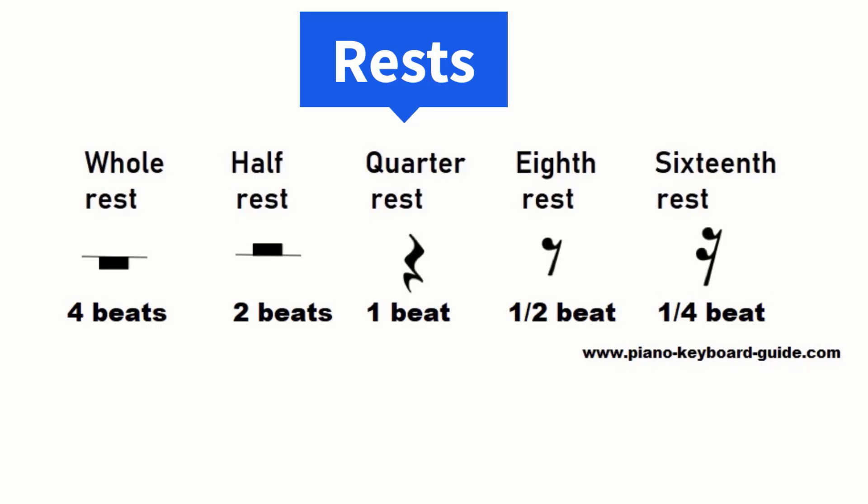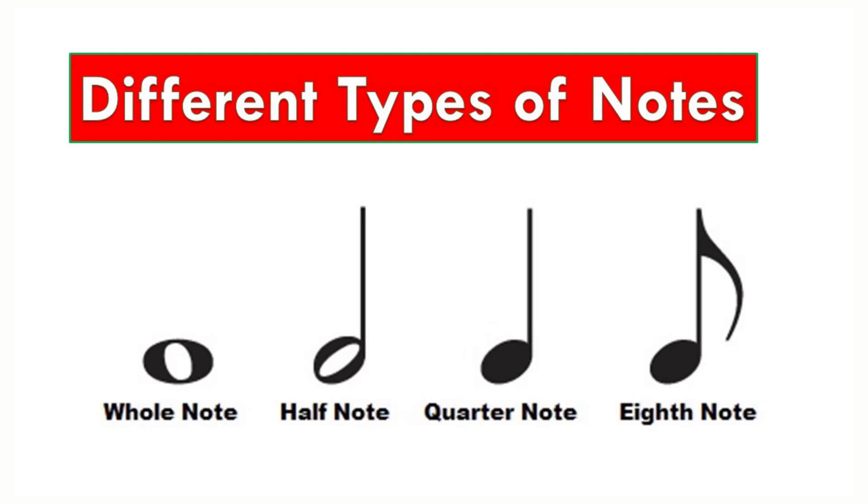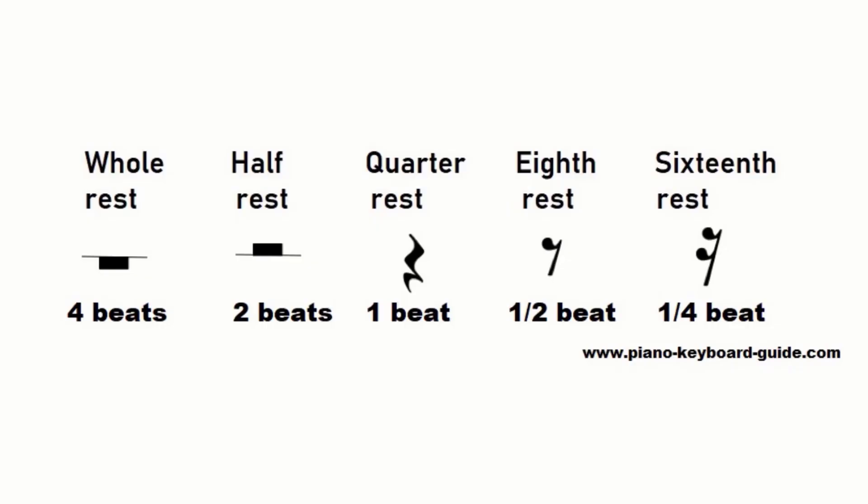To tell a musician when to play, different types of notes are used. But what happens when we want to tell the musician not to play a note? To indicate this, you use a symbol called a rest. A rest in music is a symbol that indicates that there should be a period of silence.